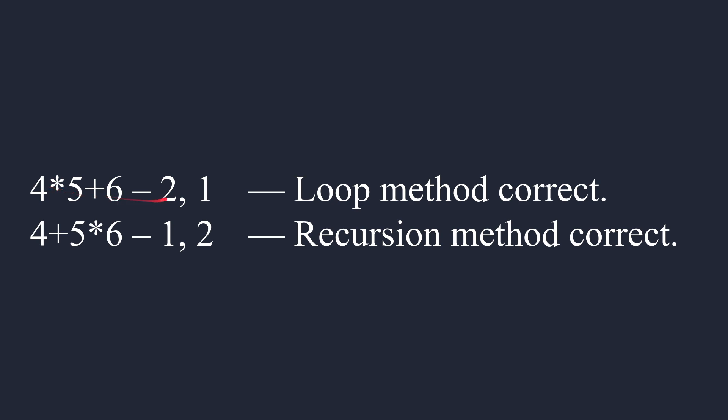Okay, so on the first one, the loop method was correct, right? Because we did 4 times 5 and then plus 6. And for the second example, the recursion was correct because we did 5 times 6 and then we did plus 4. And so we can see here that in the first example, precedence is going down because we start out with 2, which has a higher precedence than 1. And in the other example, we start out with plus, which has a precedence of 1, and then multiply, which has a precedence of 2. And the thing to recognize is that when precedence increases, so it goes up, say from 1 to 2, we should be recursing. We're using the recursive method. When precedence goes down or stays the same, we use the loop method.